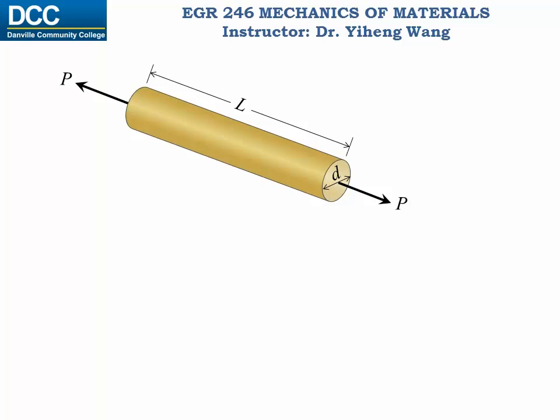For this solid shaft subjected to axial tensile forces as shown, let's imagine how it would deform. From experience we know that it will not only elongate along the axial direction, but it will also contract radially. It is impossible for this shaft to remain the original diameter — that would be against the conservation of material.